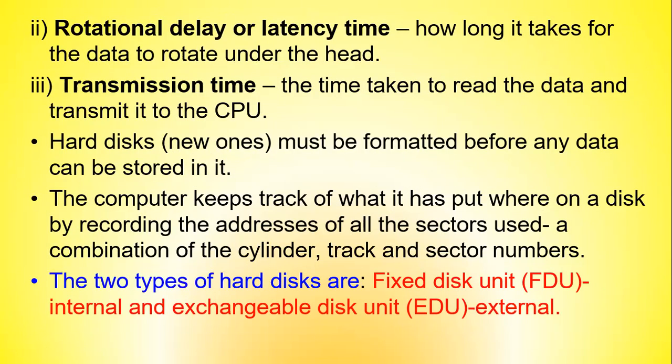The access time — the time to get data from a spinning disk with one read-write head — is a combination of: seek time, which is how long it takes the head to get to the right track; rotational delay or latency time, which is the time it takes for the data to rotate under the head; and transmission time, which is the time it takes to read the data and transmit it to the CPU. Hard disks must be formatted before any data can be stored in them, and data addresses are recorded in terms of a combination of cylinder, track, and sector numbers. The two types of hard disks are the Fixed Disk Unit (FDU) found inside the system unit and the Exchangeable Disk Unit (EDU) that is external.